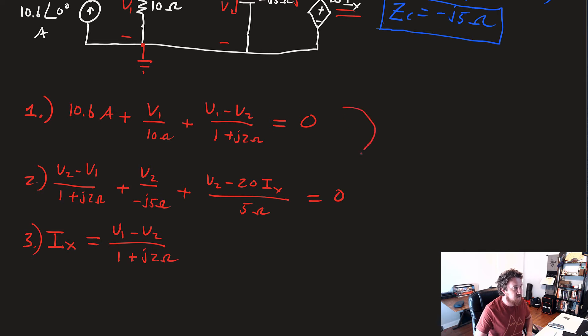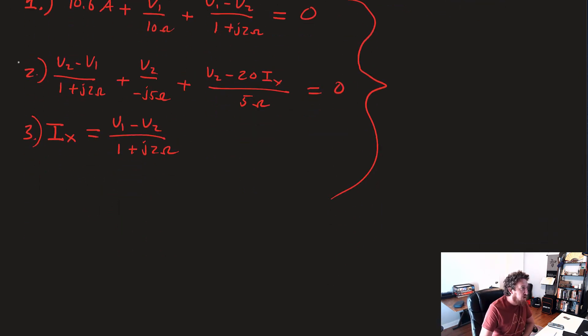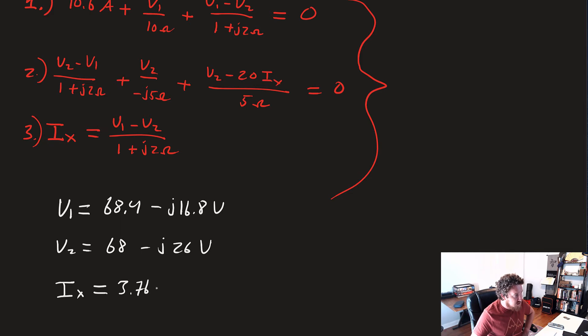Now for the sake of time, it does take a little bit to solve this out, but you can use a tool like Wolfram Alpha, or work it out by hand, or your calculator, whatever works for you. Once you crank out those values, you're going to get V1 equals 68.4 minus J16.8 volts, V2 equals 68 minus J26 volts, and current Ix equals 3.76 plus J1.68 amps.